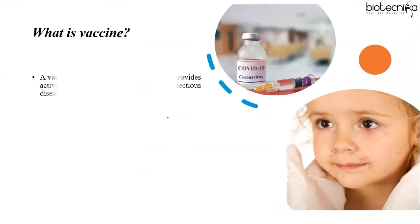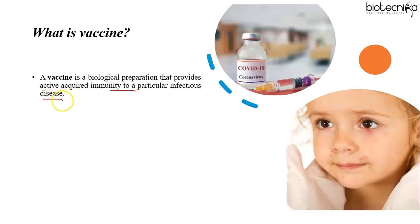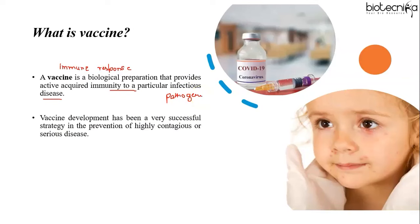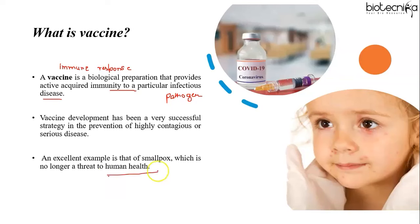A vaccine is a biological preparation that provides active acquired immunity to a particular infectious disease. It's a biological product that can be used to safely induce an immune response that confers protection against infection or disease on subsequent exposure to a pathogen. Vaccine development has been a very successful strategy in the prevention of highly contagious or serious diseases like smallpox, which is no longer a threat to human health.